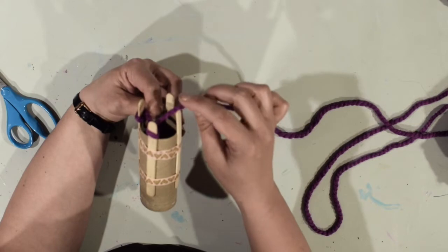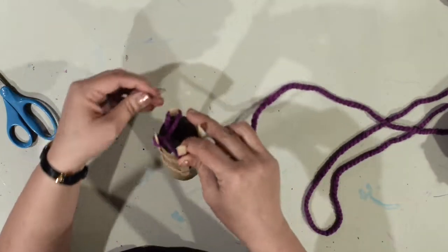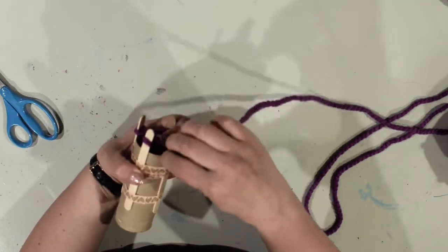Once you get the first round done, after that it gets much much much easier. Okay, so I'm going to repeat again - I'm going to go behind this popsicle stick and wrap around it.